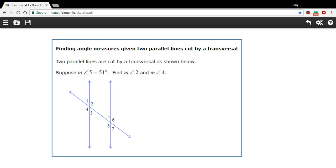We're being told here that the measure of angle 5 is 51 degrees, so I'm just gonna jot that in here and that's 51 degrees, and we want to find the measures of angle 2 and the measures of angle 4.